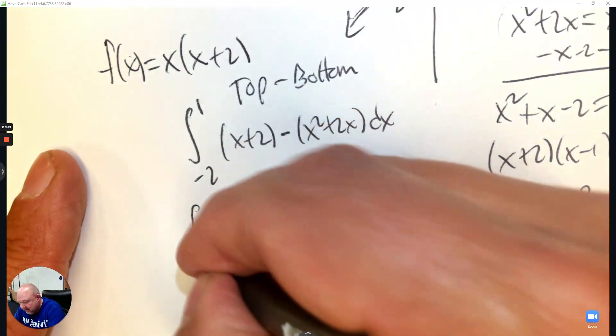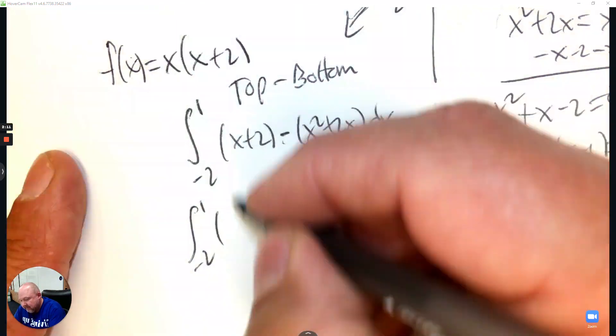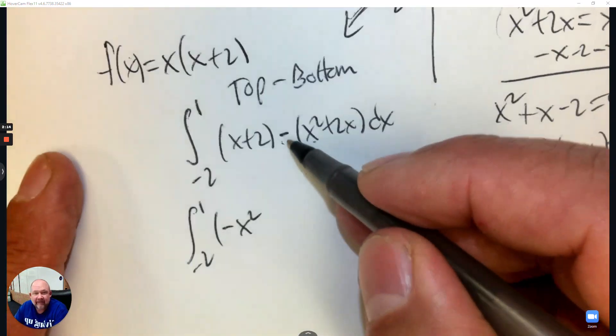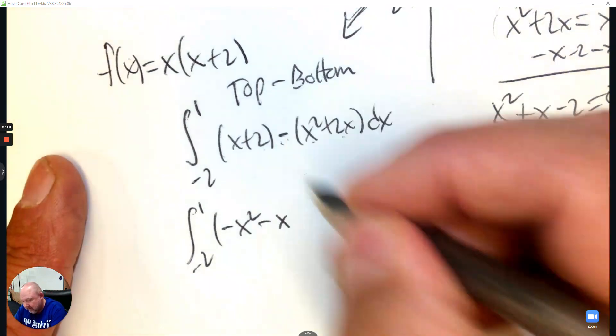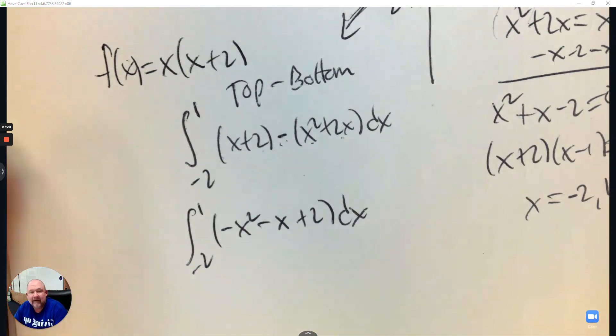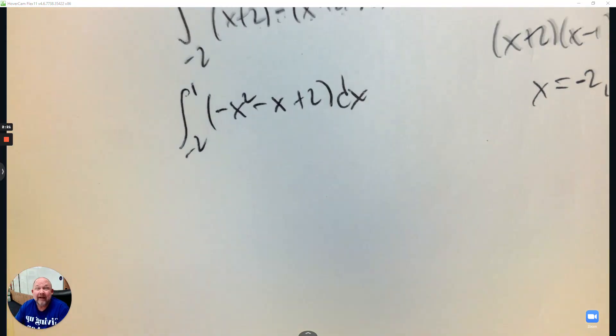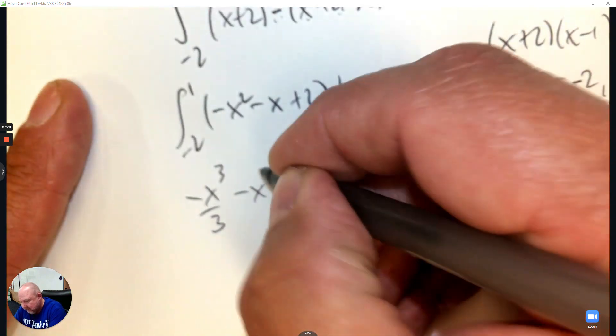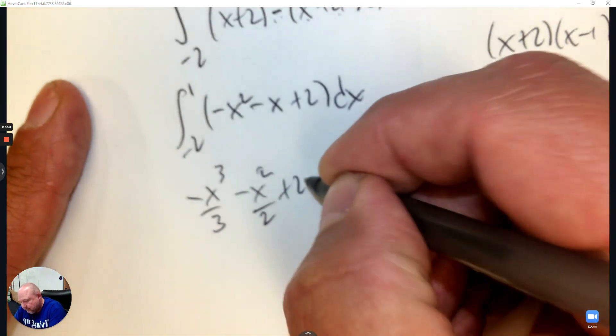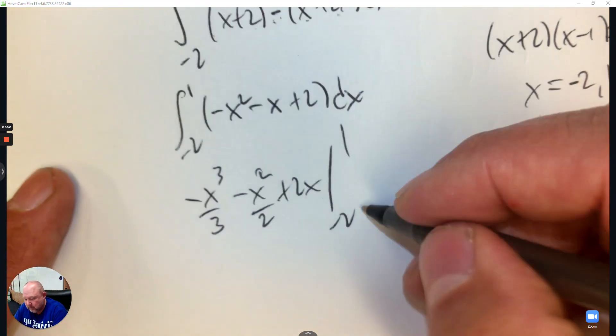Next, I'm going to combine like terms. So we have negative x squared. I have negative 2x plus 1x, so that's negative 1x. And then I have 2. So I've combined like terms to make it easy on myself. To now find the area, we are going to integrate. So we're going to add 1 to the exponent and divide. And then I'm going to integrate from negative 2 to 1.